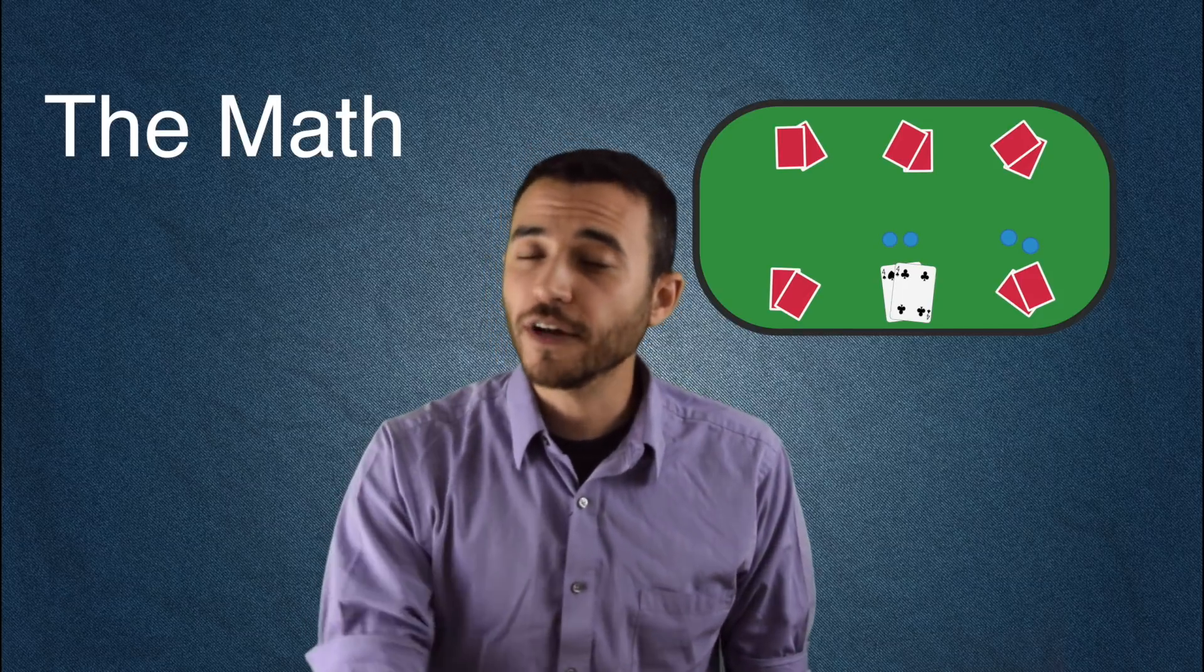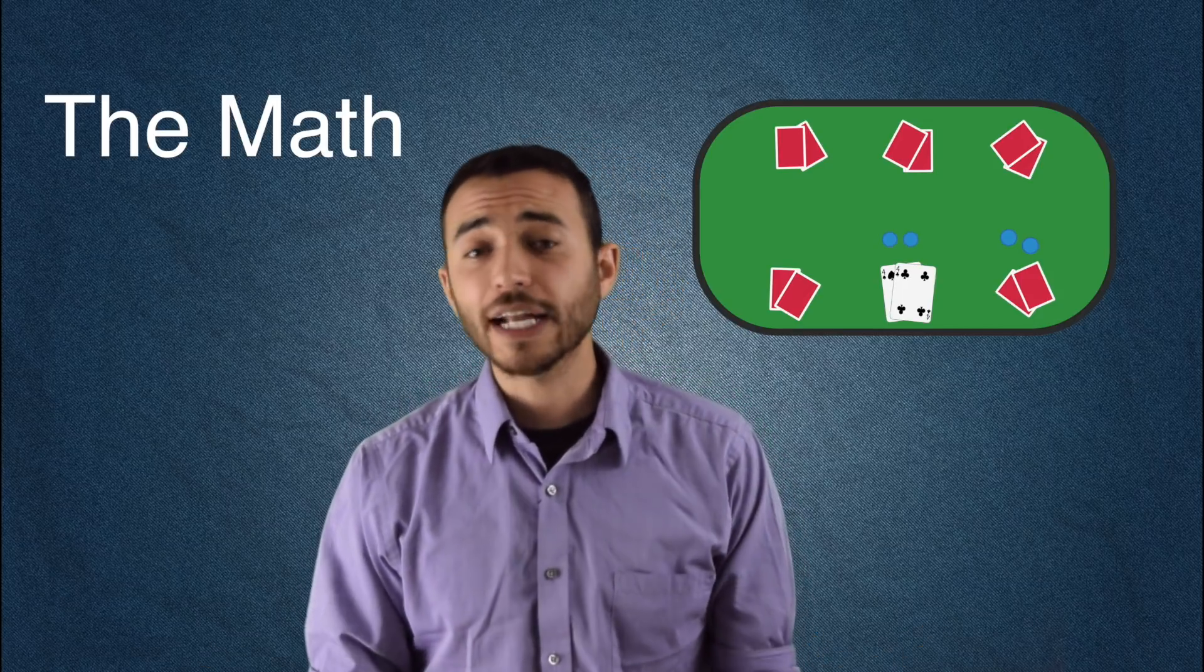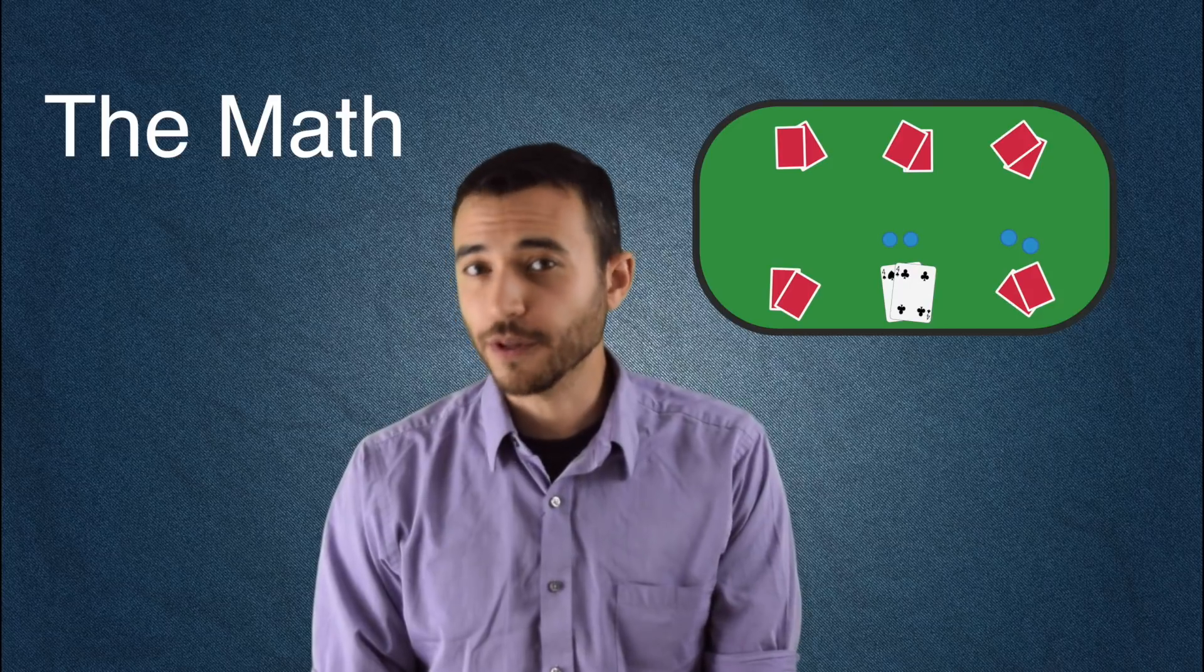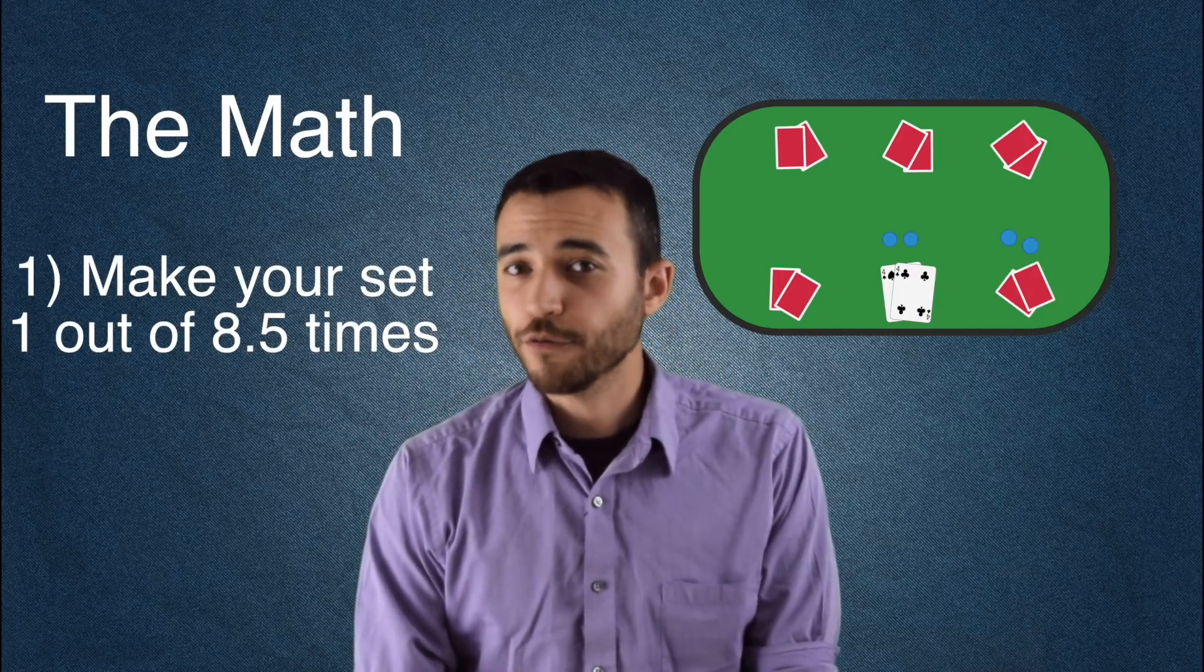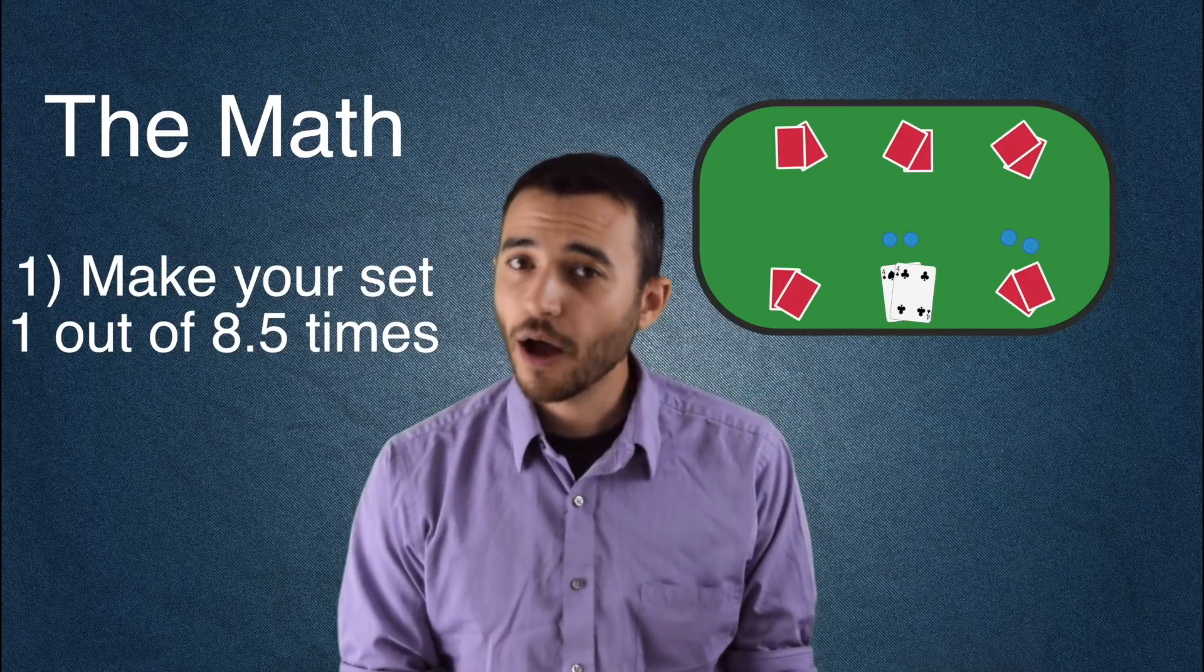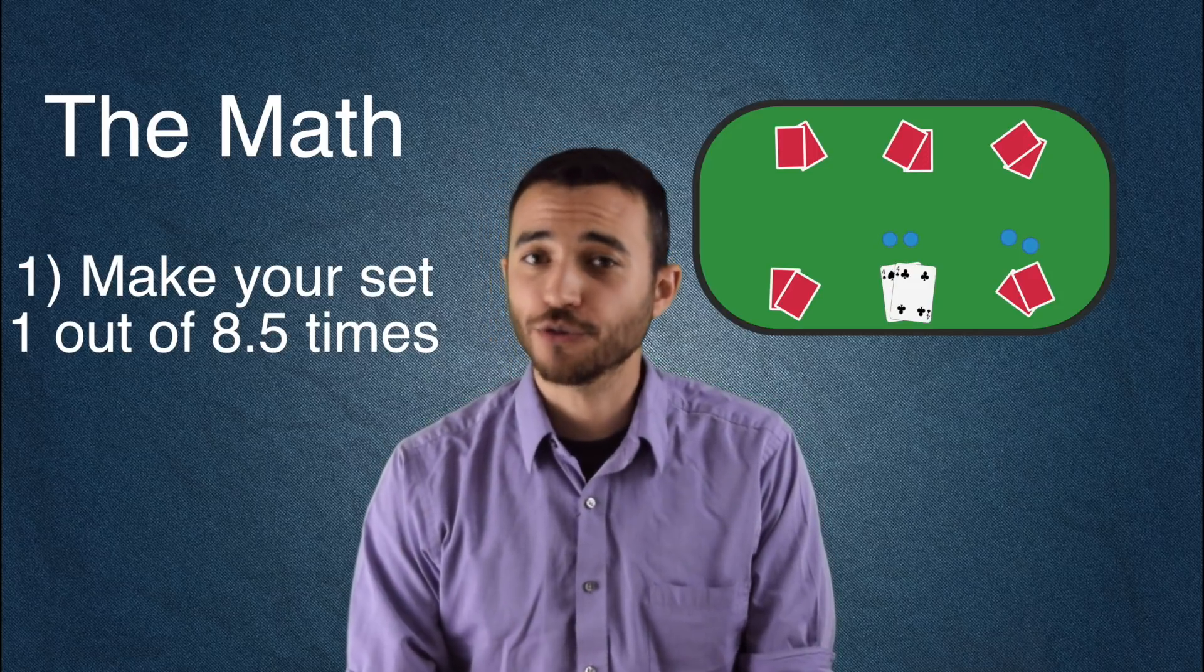So what can we learn if we break this down mathematically? Let's start with the most fundamental percentage. How often will that elusive third four be waiting for you on the flop? The answer is that the odds are a little worse than one out of every eight times. That's how often your set mining attempt will actually strike gold.